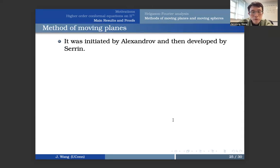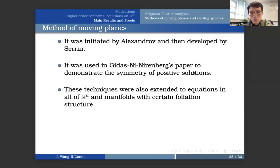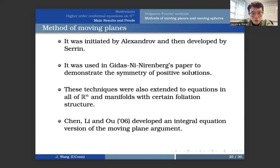So after talking about the moving sphere, I think it also worth mentioning the moving plane method, which is somehow like a prototype of the moving sphere method. And this was initiated by Alexandrov, and then developed by Serrin in 1970s. Later it was used in Gidas-Nirenberg paper to demonstrate the symmetry of positive solutions. And this technique is also extended to equations in the entire space and manifolds with certain foliation structure. One big contribution is by Chen Li and Ou in 2006, they developed an integral equation version of the moving plane argument, which is the one that we were using for our problem, rather than the method for the differential equation. Of course, there are many other contributions by many mathematicians.